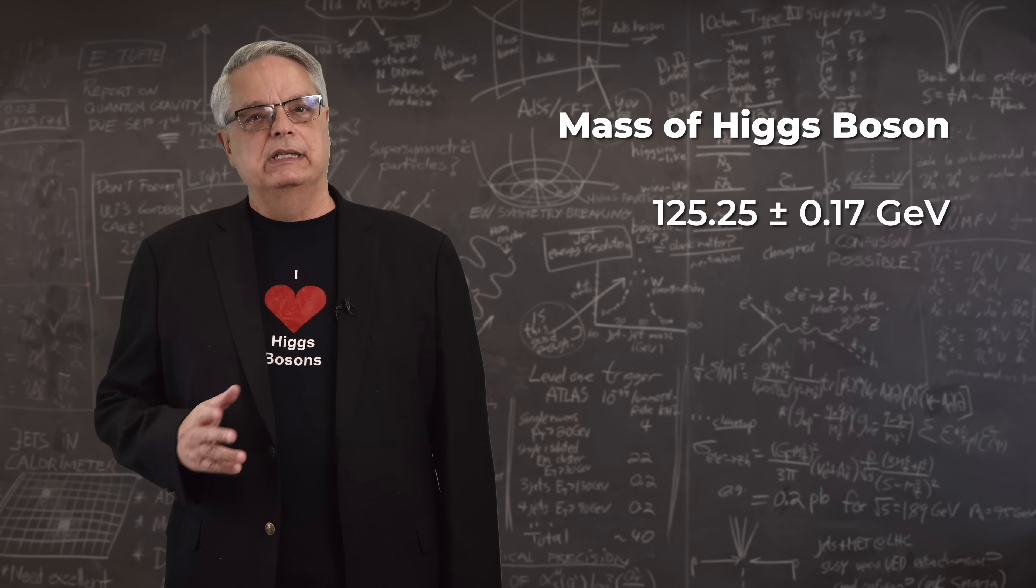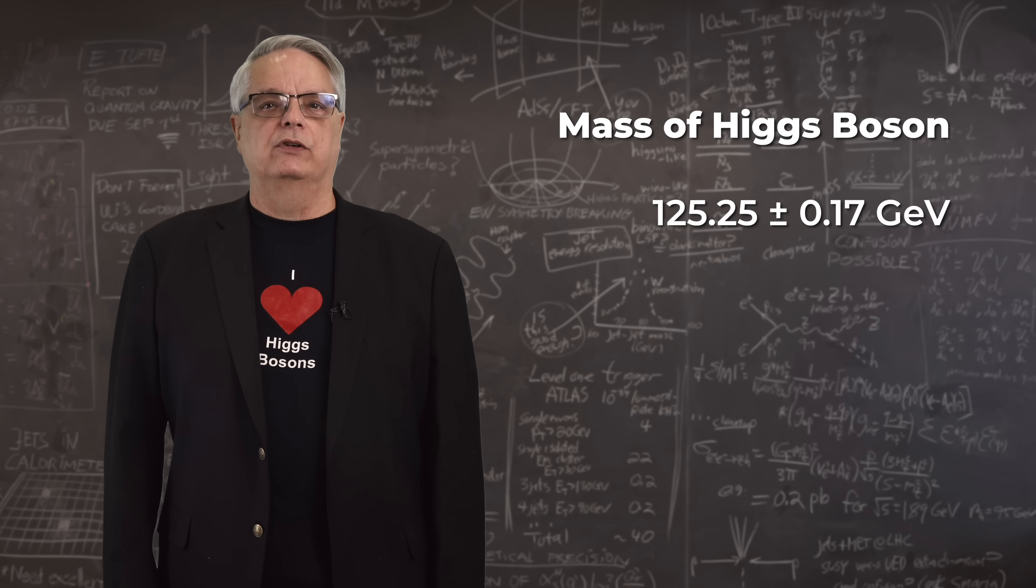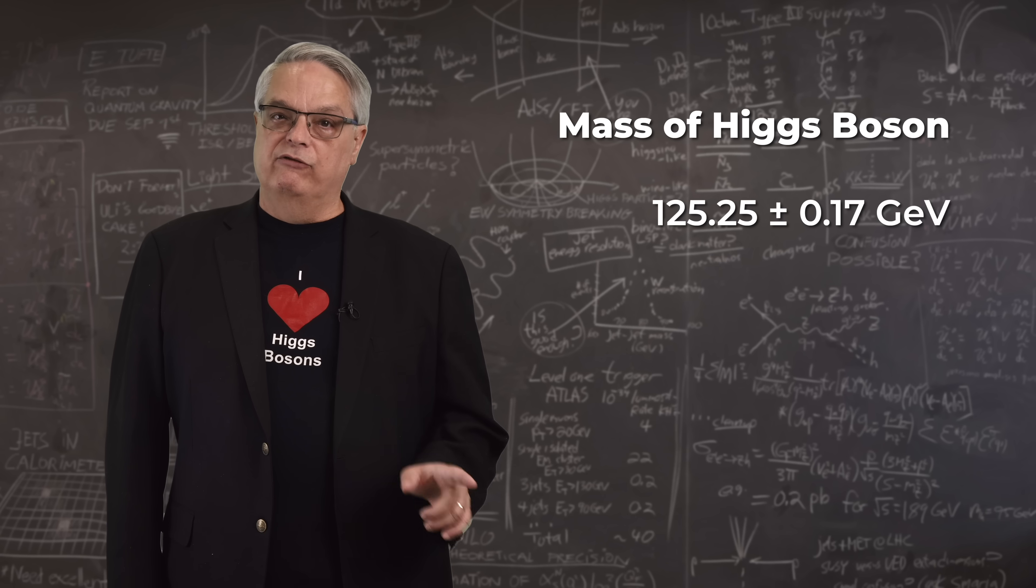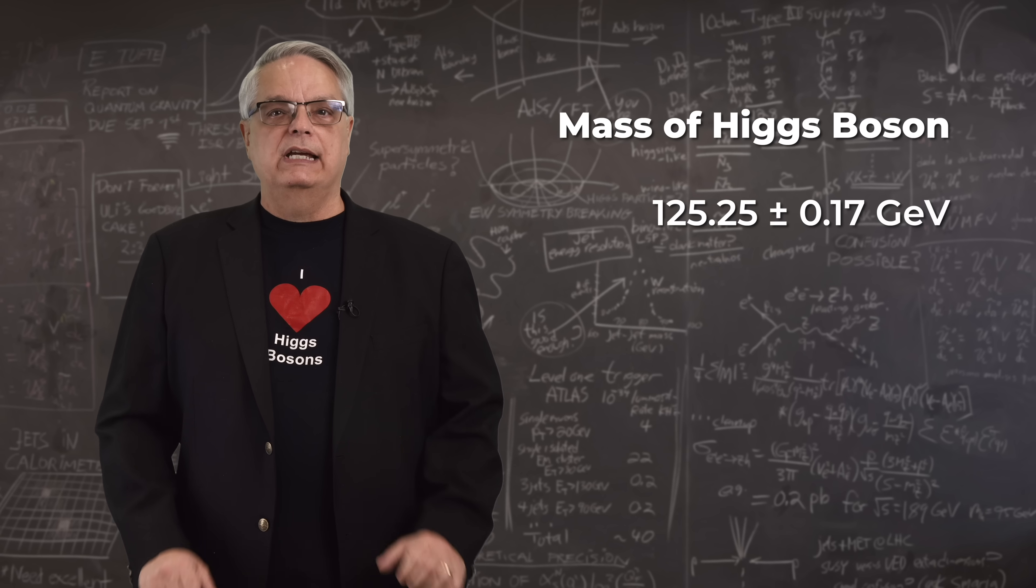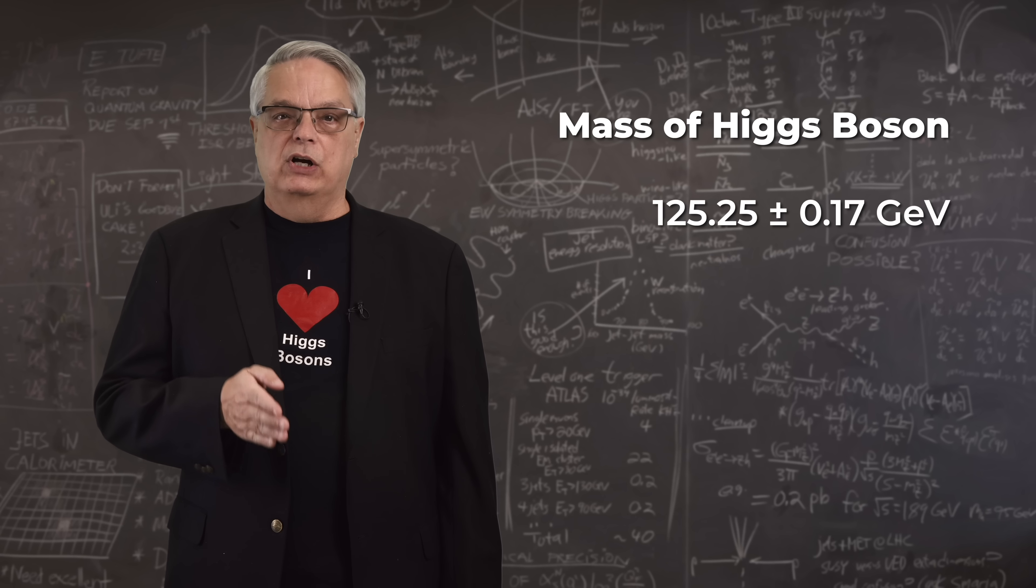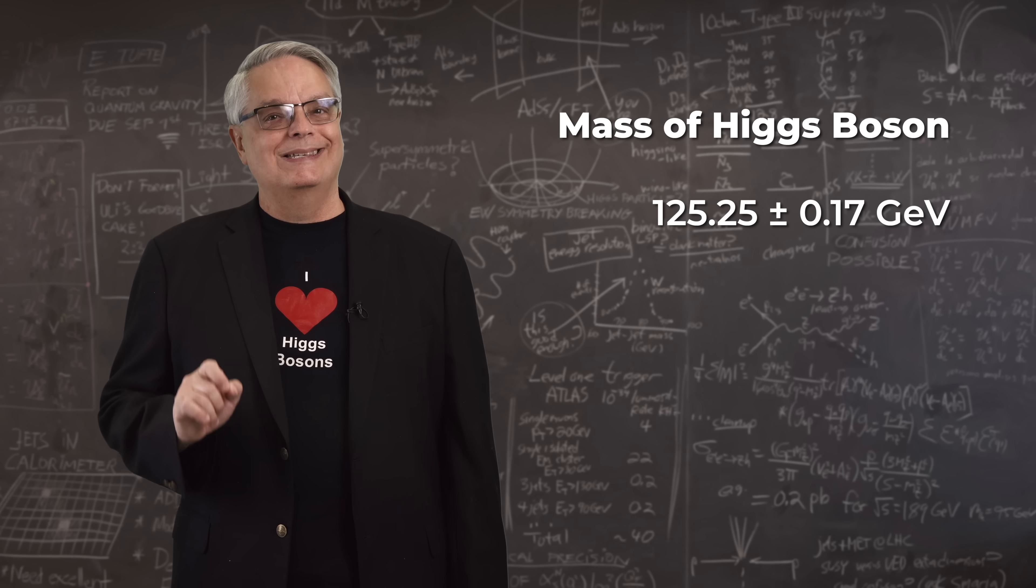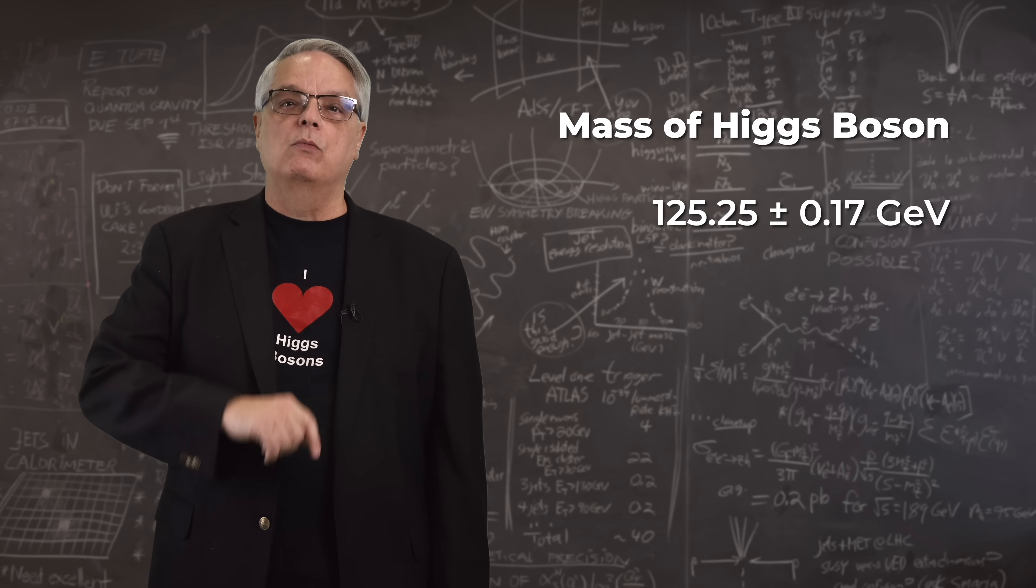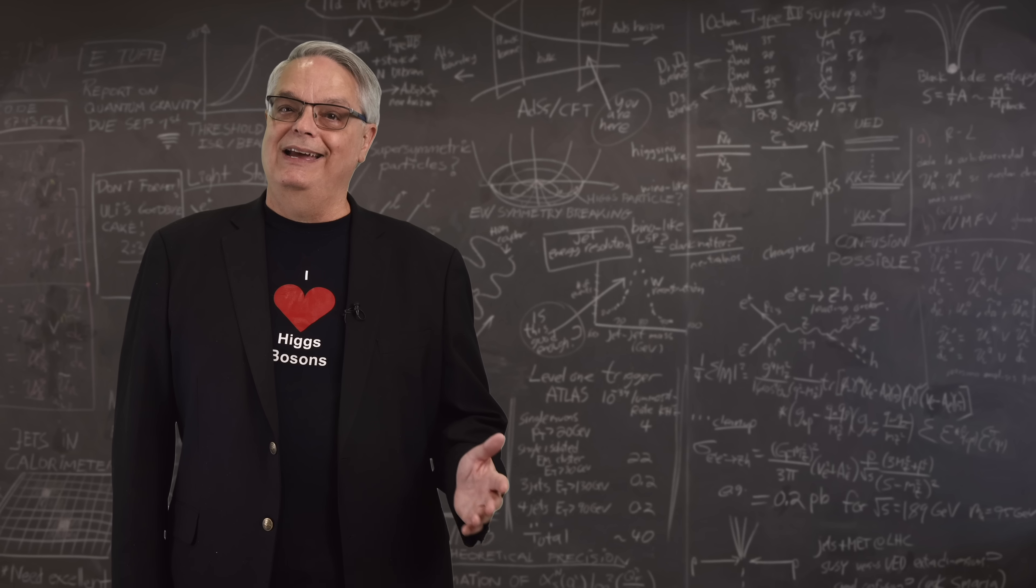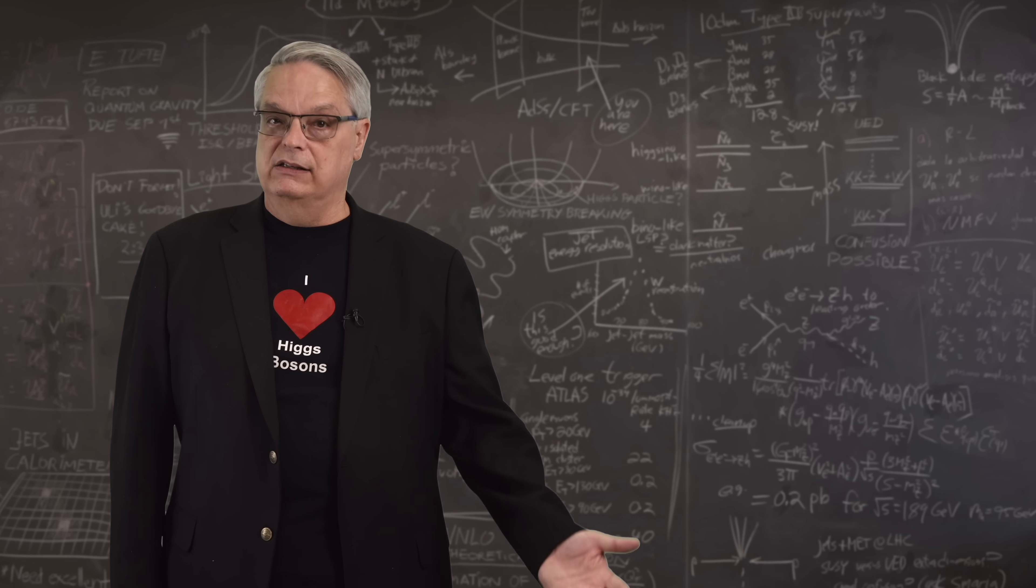So, what's the status now over a decade after the Higgs boson was discovered? Basically, the journey continues. More data has confirmed the discovery. When all data is combined, the current estimate for the mass of the Higgs boson is 125.25 plus or minus 0.17. Furthermore, we've confirmed lots of the properties that the Higgs boson was predicted to have back in the 1960s and 70s.